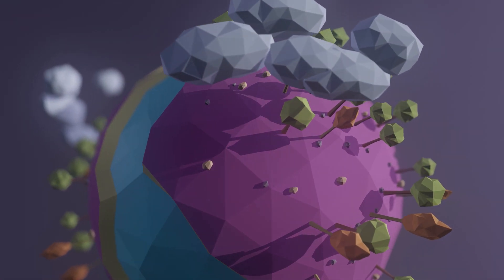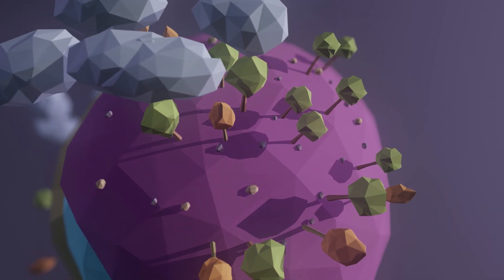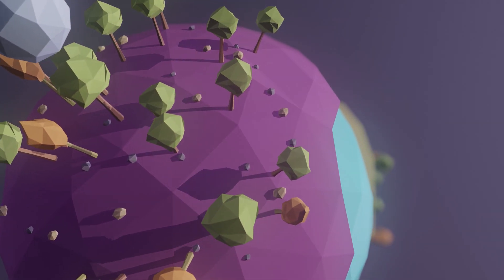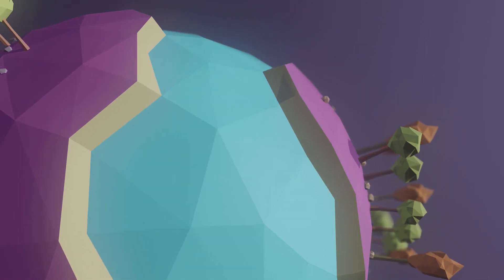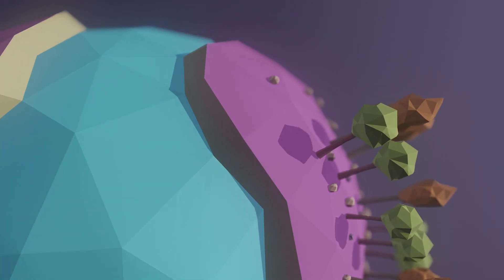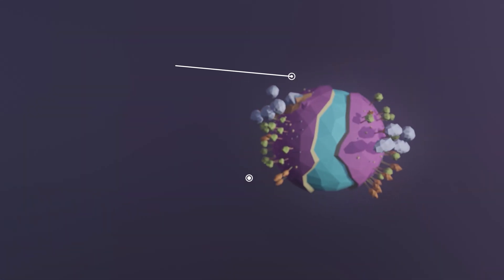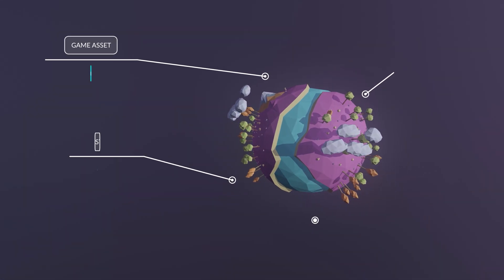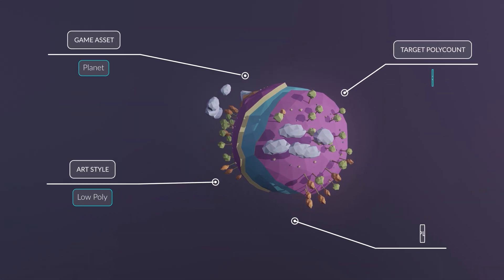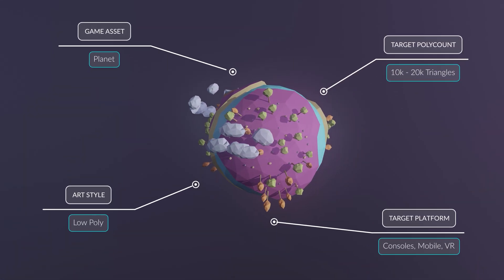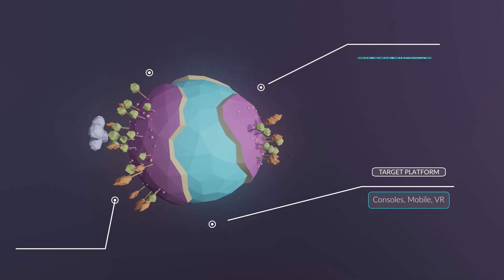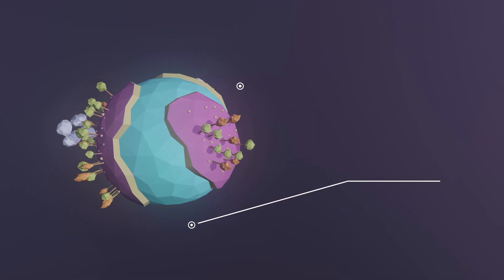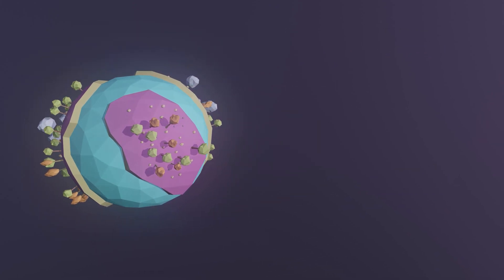This is a two-parter in which we'll be making a low-poly planet. We'll be looking at how to get the initial shape, how to use remesh to give us more topology for sculpting, and then finally how to use Maya's MASH feature to easily set-dress the planet. Now let's jump right in.